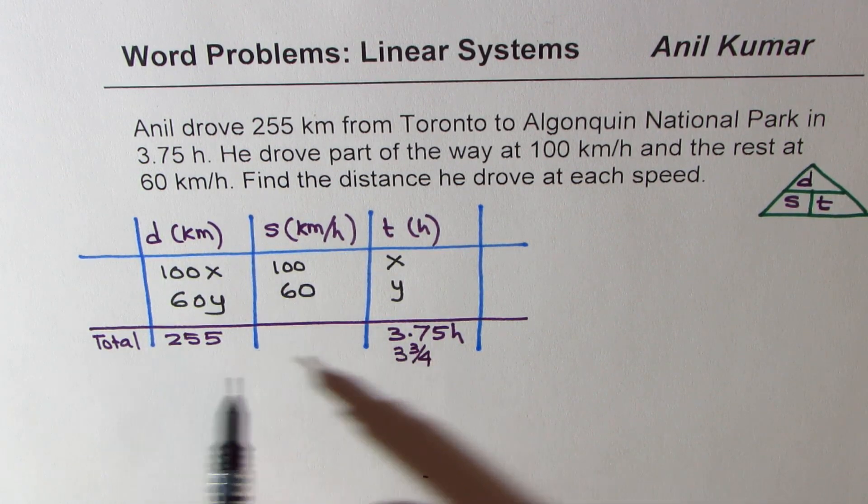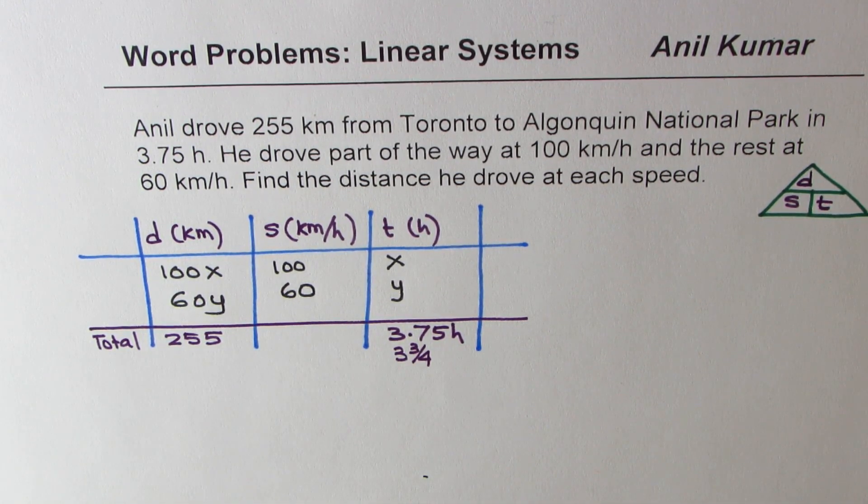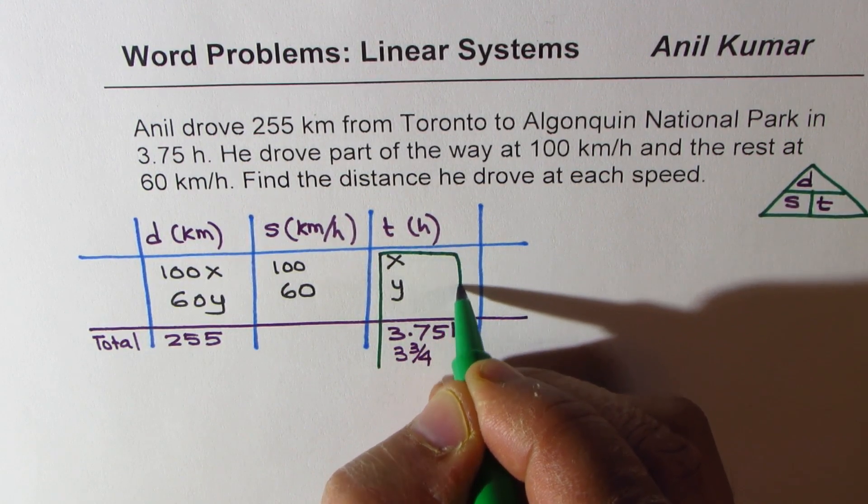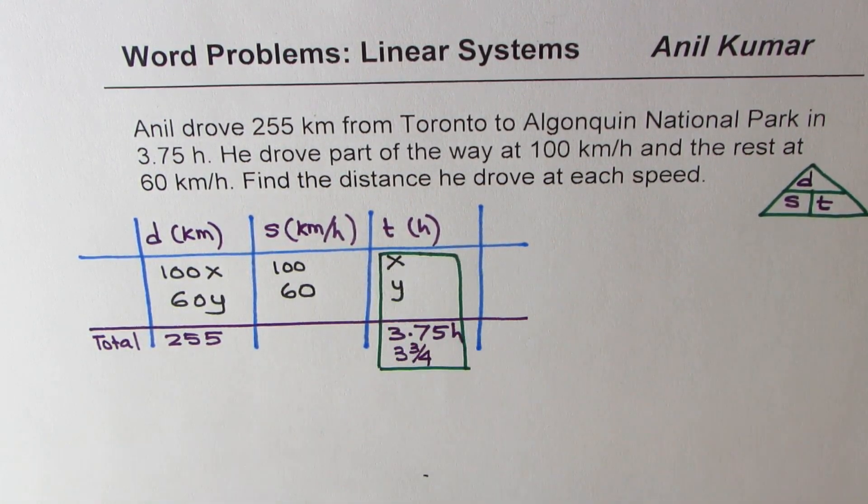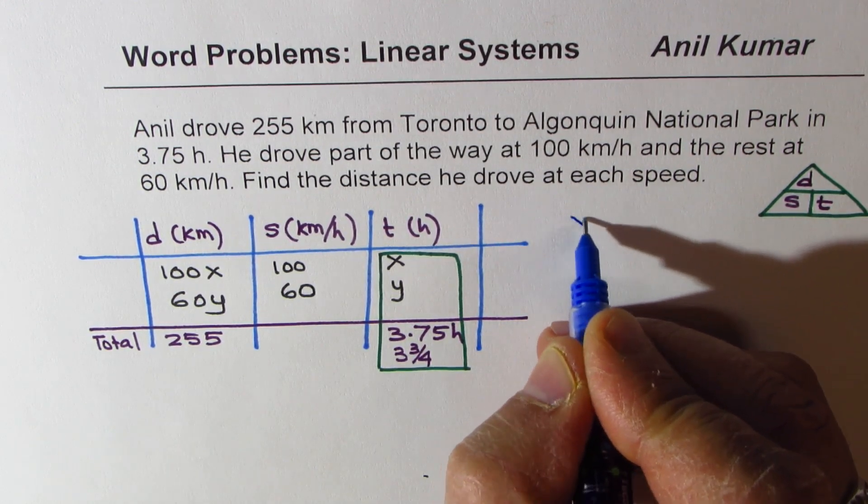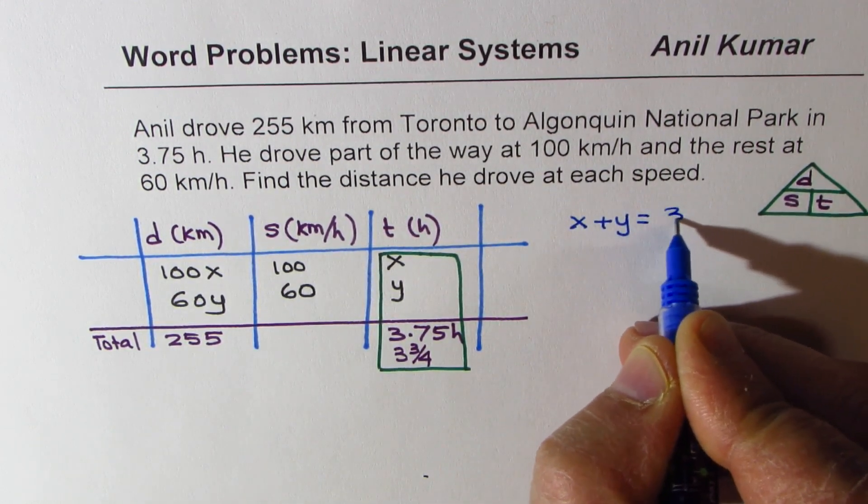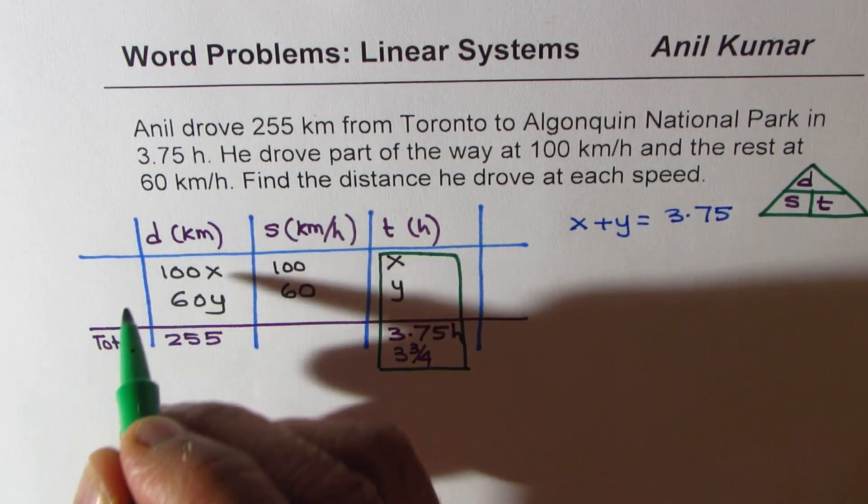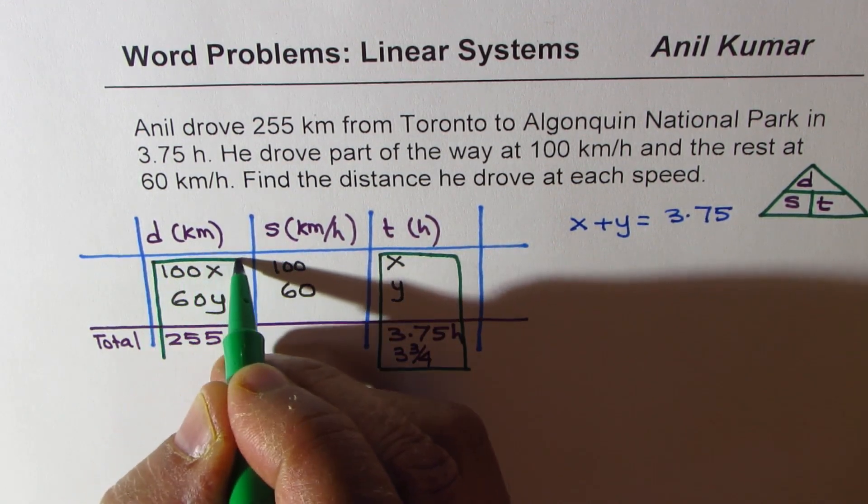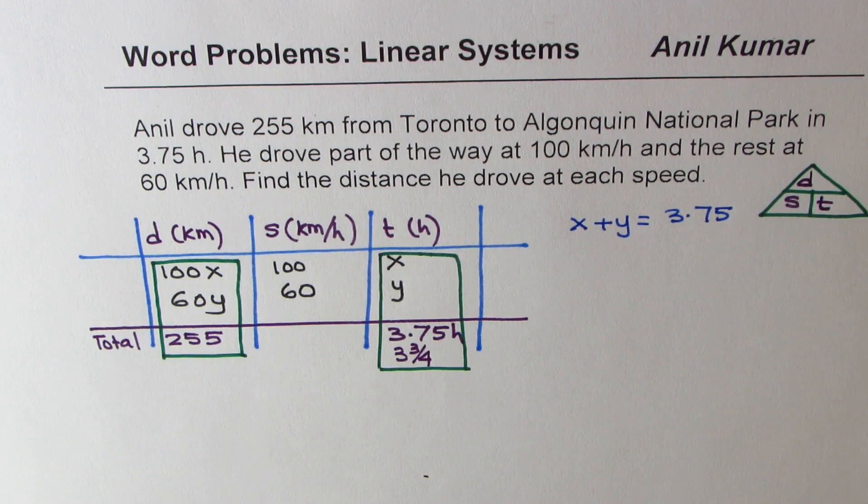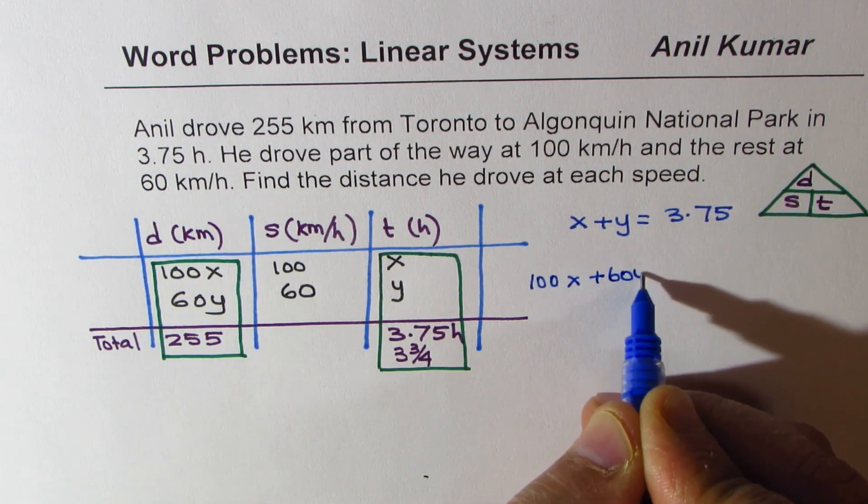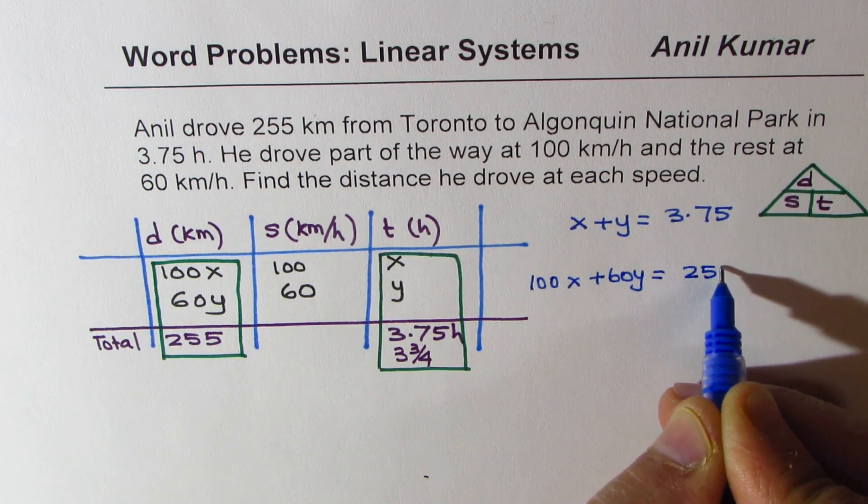So now we get different equations to work with. One set of equations is right here, which tells you that total time is x plus y. So we could write one equation as x plus y equals 3.75. And the second equation which you get is 100x plus 60y equals 255. Do you see that part?